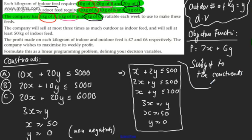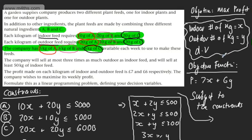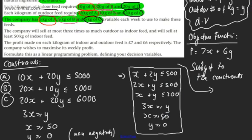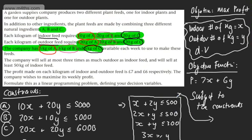We can now write this up: the objective is to maximise profit. The objective function is P equals 7x plus 6y, where x is the number of kilograms of indoor feed produced and y is the number of kilograms of outdoor feed, subject to the constraints we found. We could then go ahead and graph that and look for solutions. We've looked at two problems setting up linear programming problems, and later on we will look to solve them.